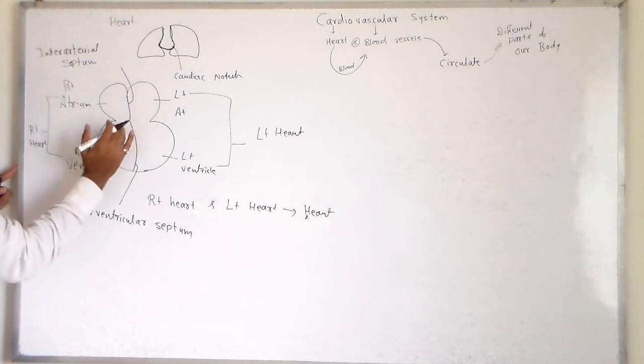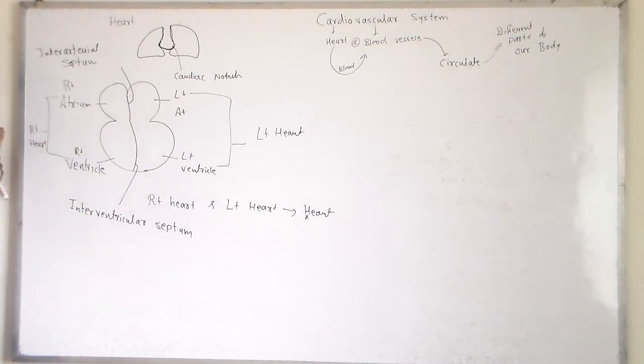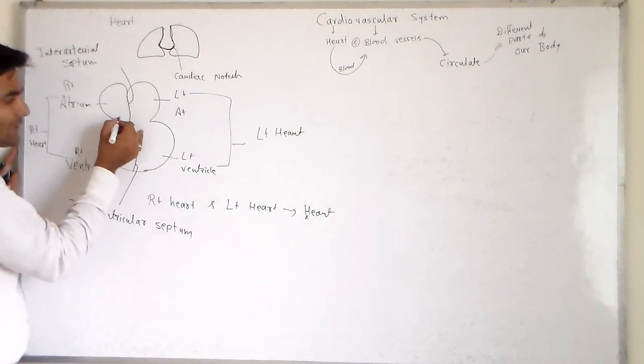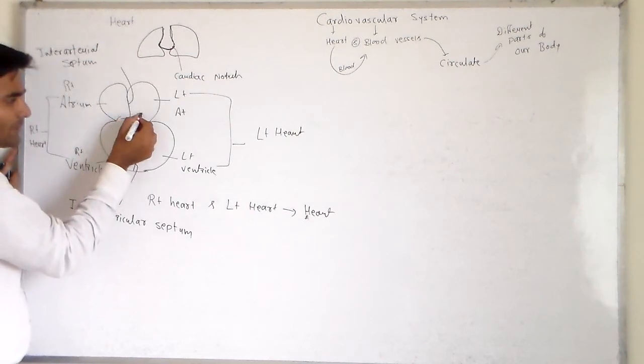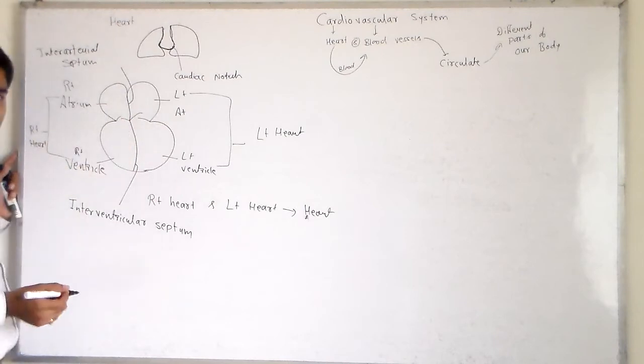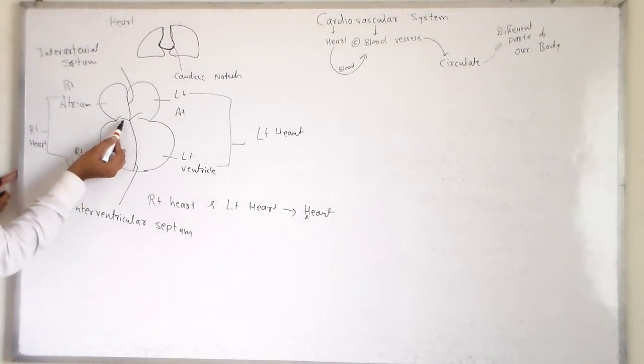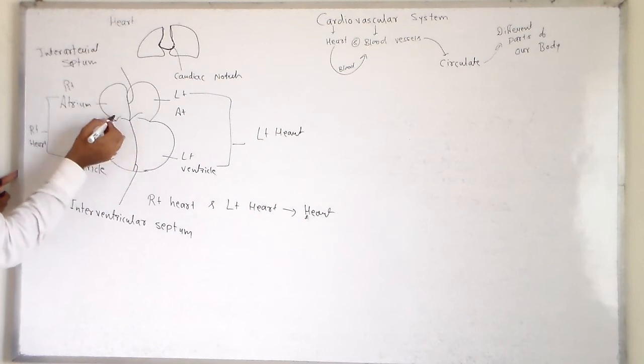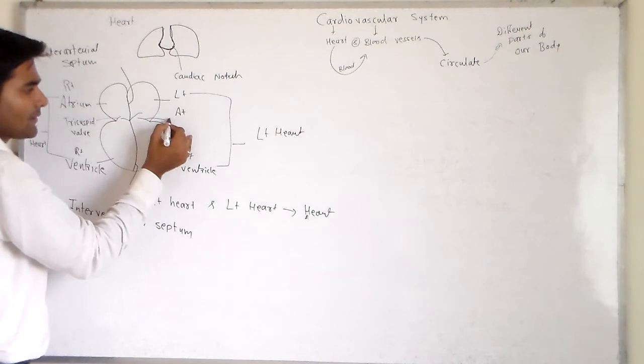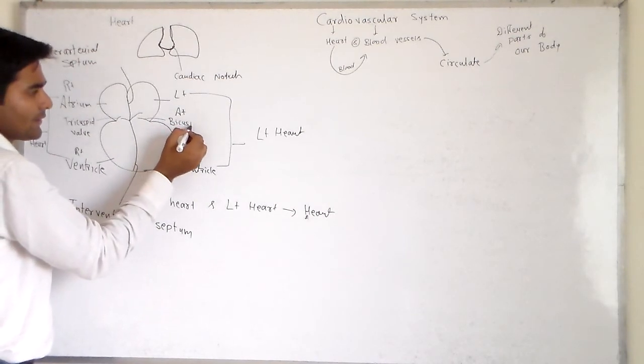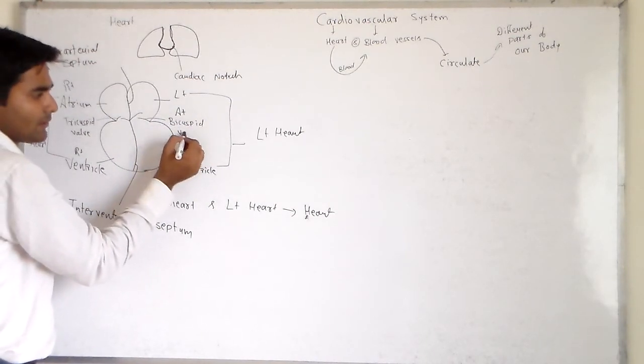Between the atrium, between the ventricles, there is a muscular septum present known as inter-ventricular septum. Inter-ventricular septum. This is the tricuspid valve. Tricuspid valve.